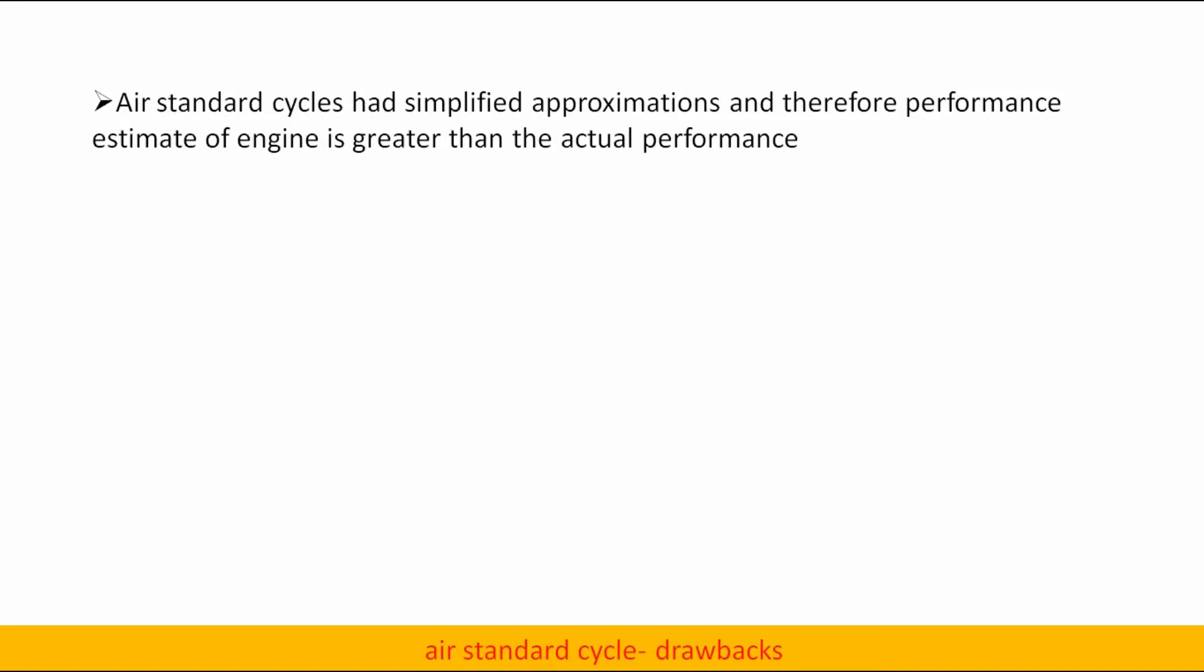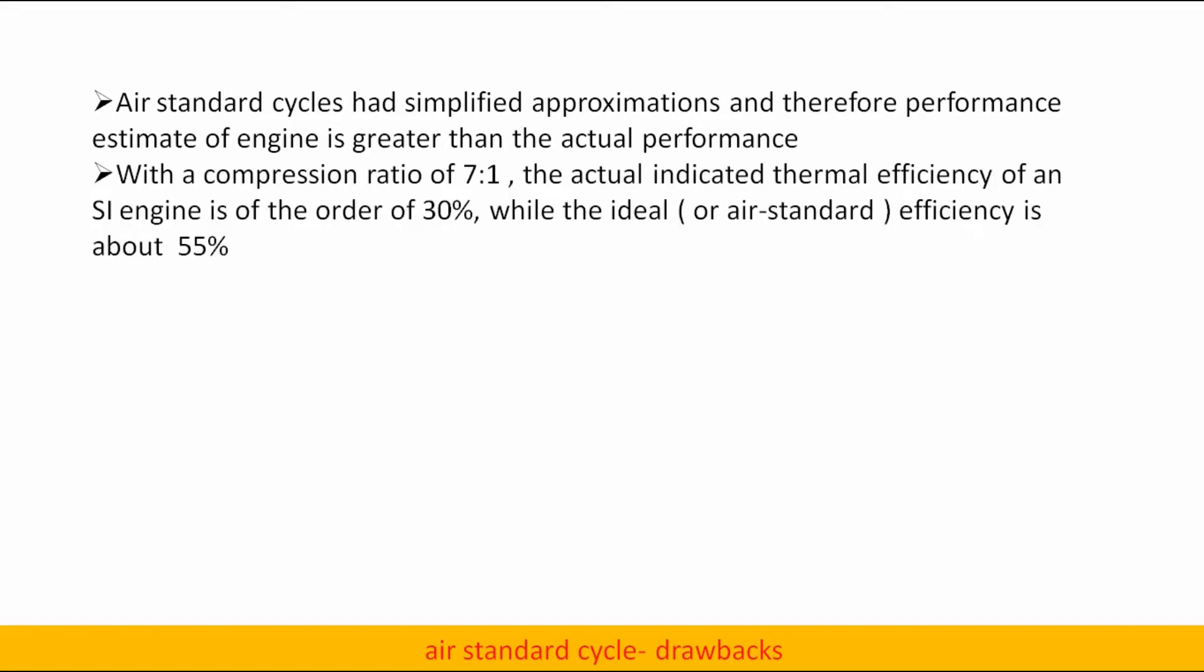Air standard cycles have simplified approximations and therefore performance estimates of engines are greater than actual performance. For example, with a compression ratio of 7:1, the actual indicated thermal efficiency of an SI engine is of the order of 30%.